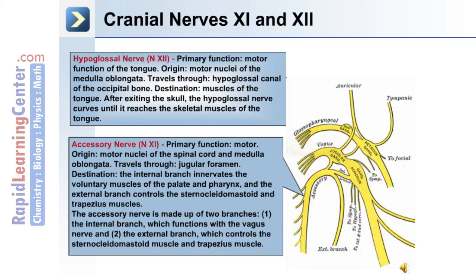The 12th cranial nerve is the hypoglossal nerve. Its primary function is the motor function of the tongue. The origin is the motor nuclei of the medulla oblongata, and it travels through the hypoglossal canal of the occipital bone. The destination of the hypoglossal nerve is the muscles of the tongue. After exiting the skull, the hypoglossal nerve curves until it reaches the skeletal muscles of the tongue.